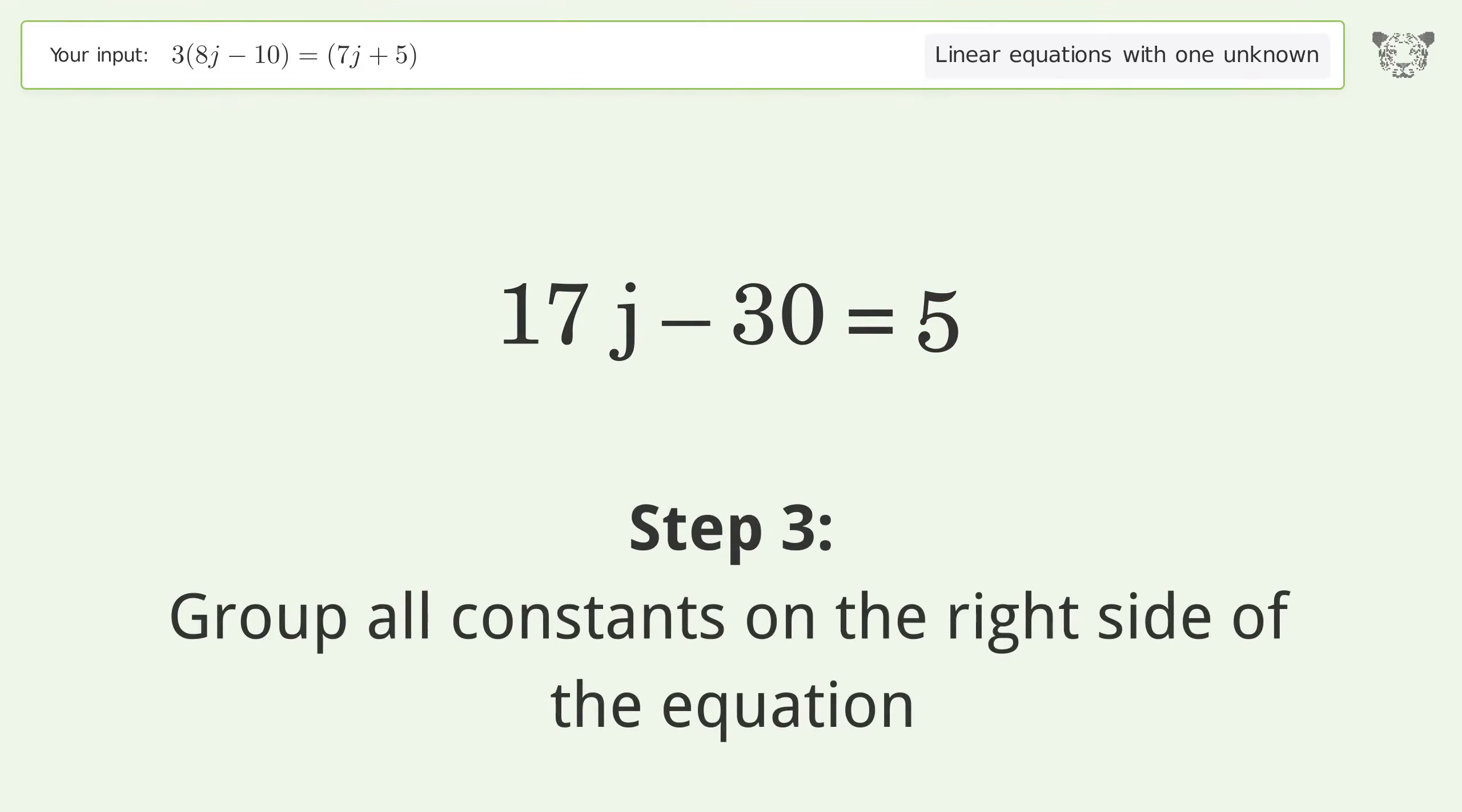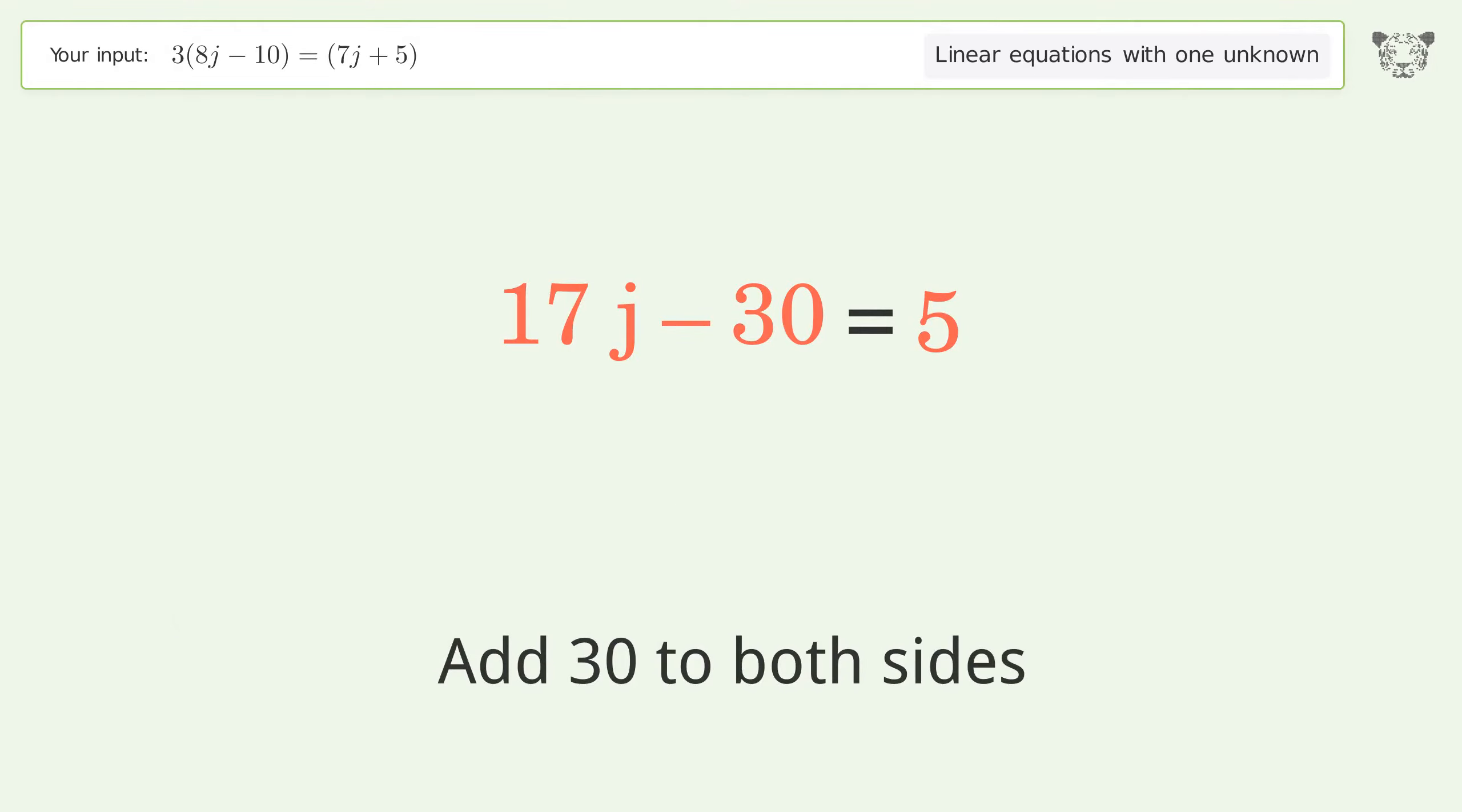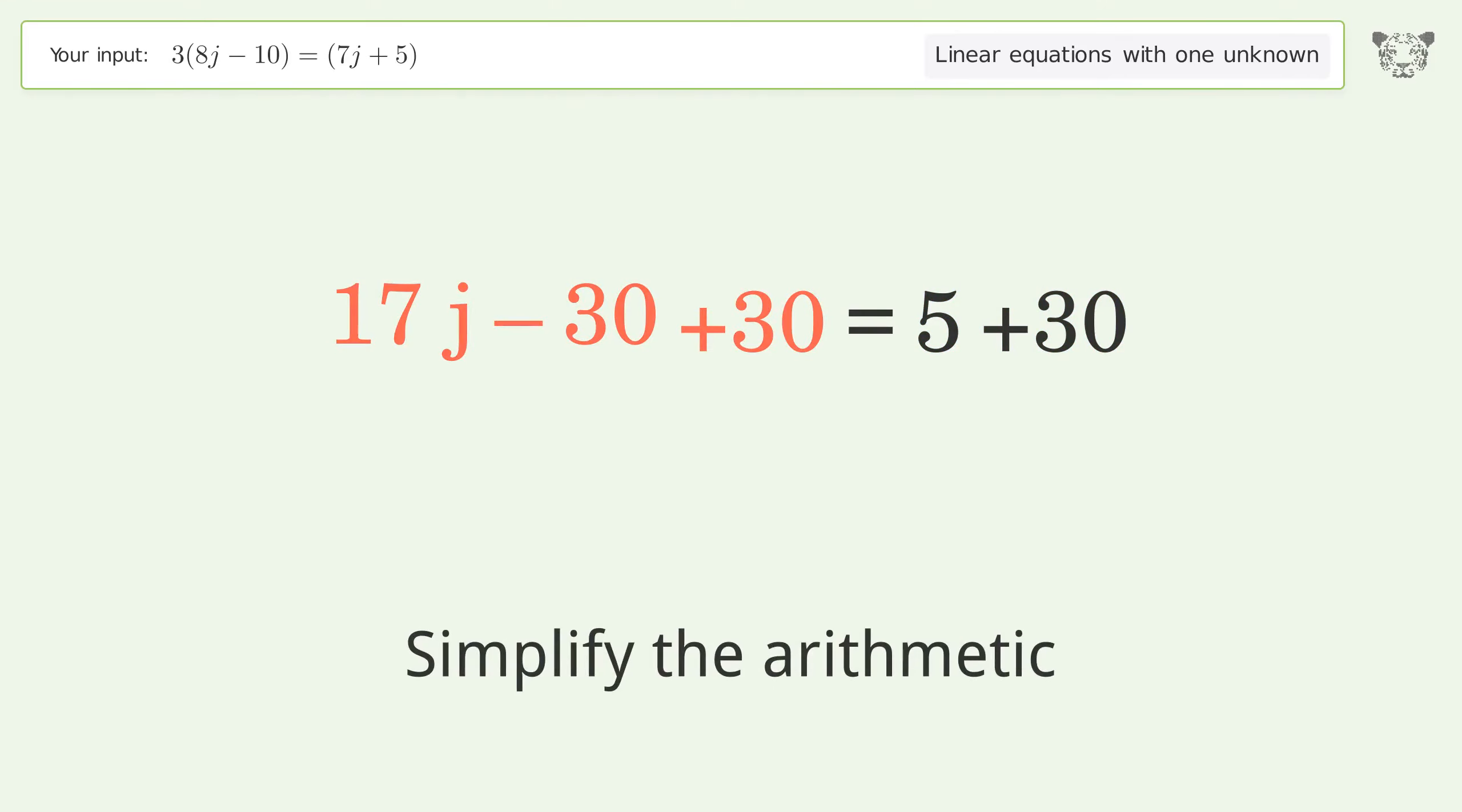Group all constants on the right side of the equation. Add 30 to both sides. Simplify the arithmetic.